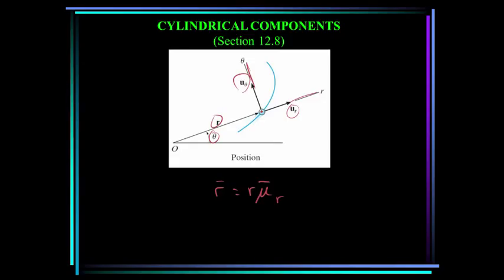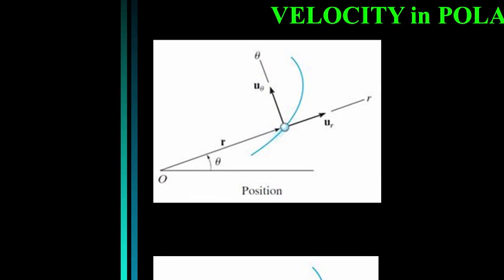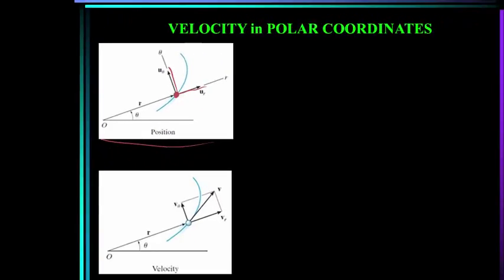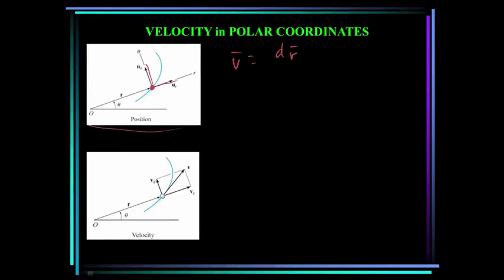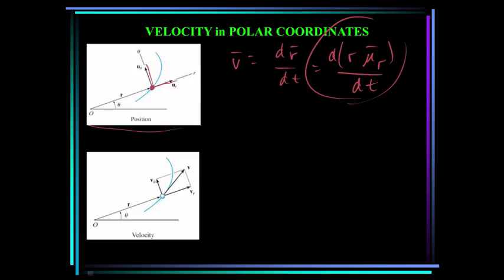Note that theta must be measured counterclockwise from the horizontal. Now let's talk about velocity. We have the position vector R going to a particle at angle theta measured counterclockwise from the horizontal axis. We define a coordinate frame with u sub r, the unit vector in the R direction, and u sub theta, the unit vector in the theta direction. The velocity is the time rate of change of the position vector, which I can write as d/dt of R times u sub r. When you take the derivative and do some manipulation, as shown in the textbook, the velocity equals r-dot in the u sub r direction plus r times theta-dot in the u sub theta direction.